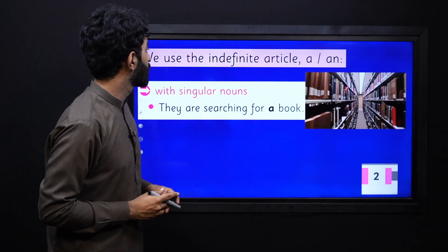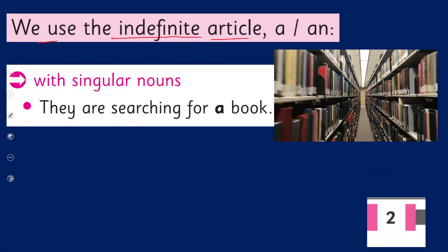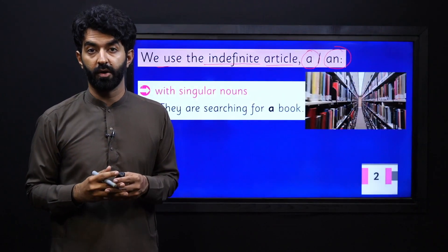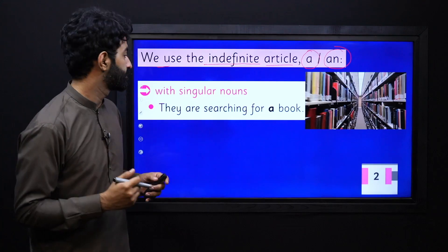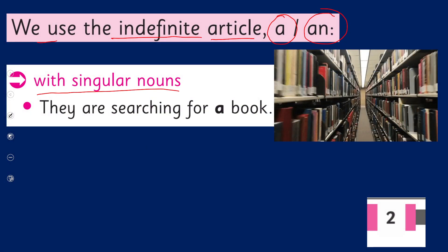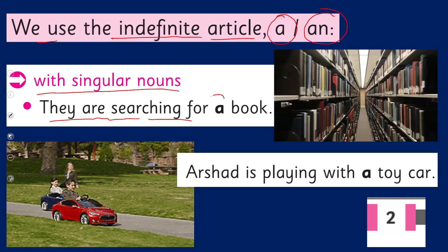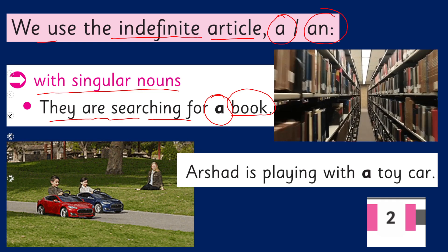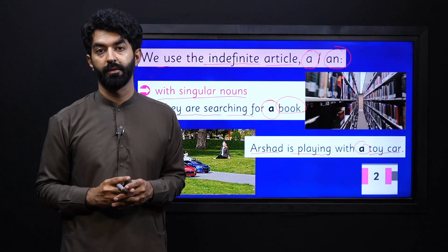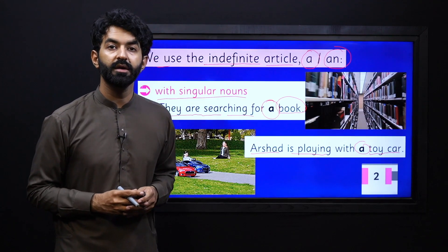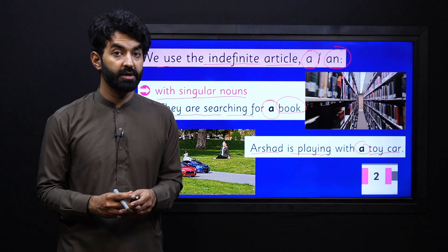Now let's see how we use the indefinite article — a and an. We use it to show a singular noun. When we have a singular noun we use article a or an. For example, with singular nouns: 'They are searching for a book' — because book is a singular noun, that's why we are using a before it. 'Arshad is playing with a toy car' — we used a because we are talking about one toy car. Keep this in mind: this is how we use articles with singular nouns.